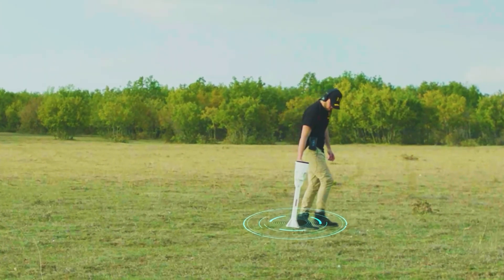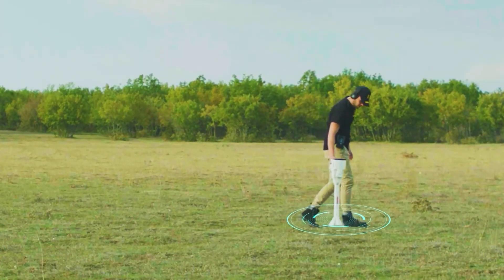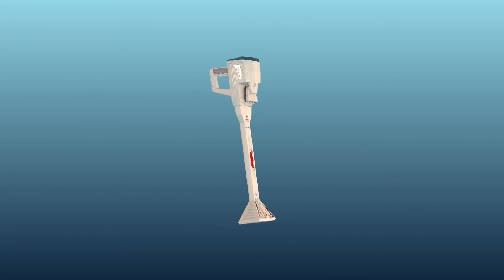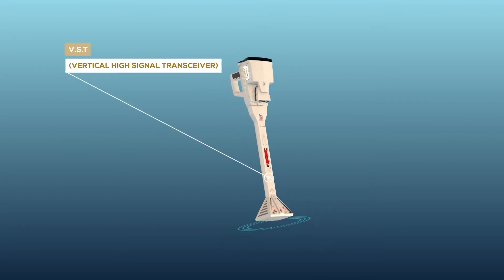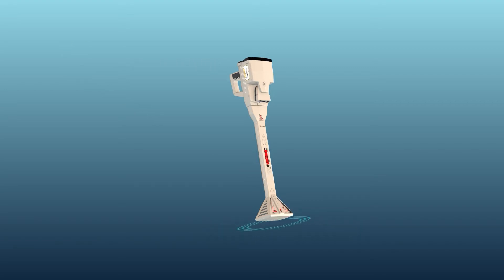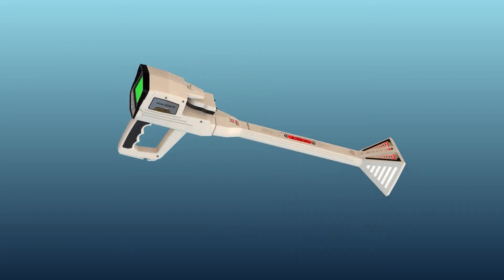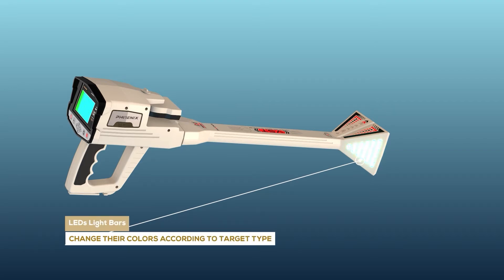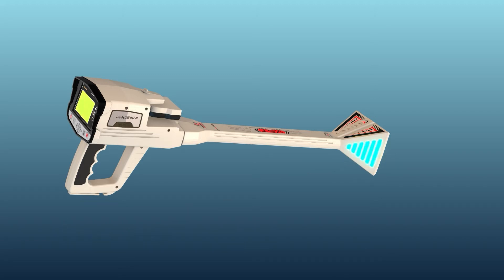The signal measurement process, or the scanning process, is done by the VST — Vertical High Signal Transceiver Unit — which is a probe at the end of which there is a quadrilateral cone on both sides and bars consisting of many light-emitting diodes, or LEDs, that change their colors according to target type, depending on the target that the VST probe is passing over at that moment.